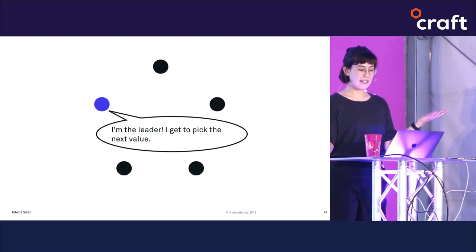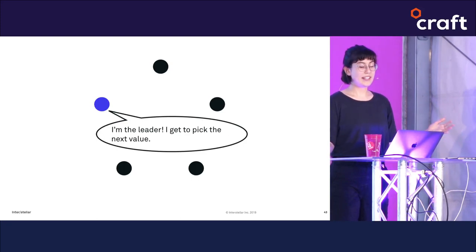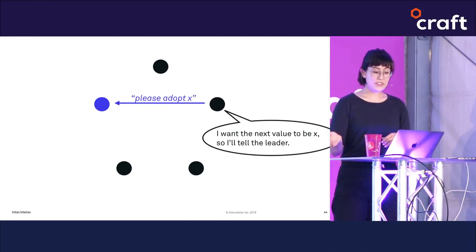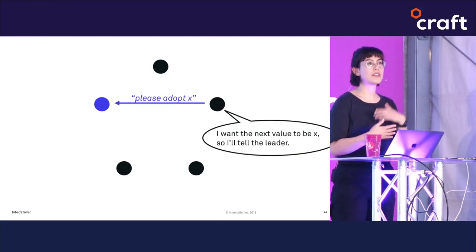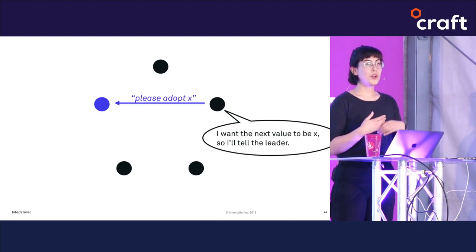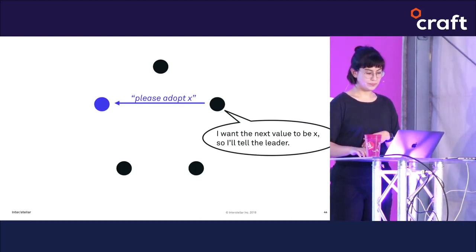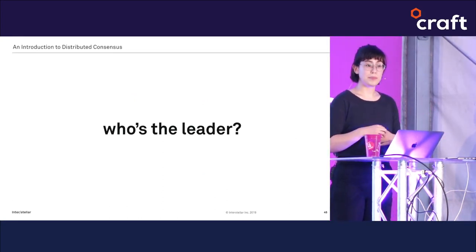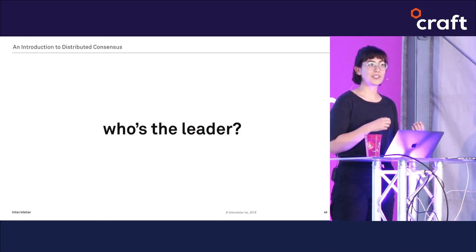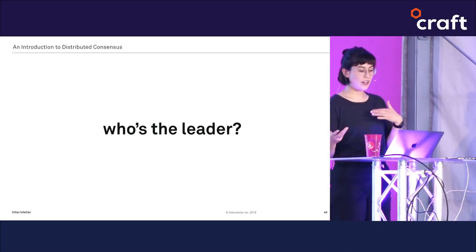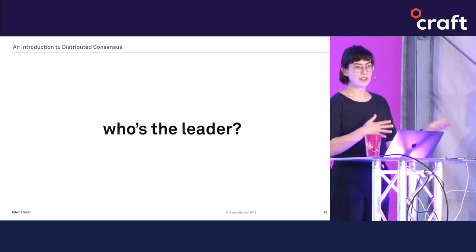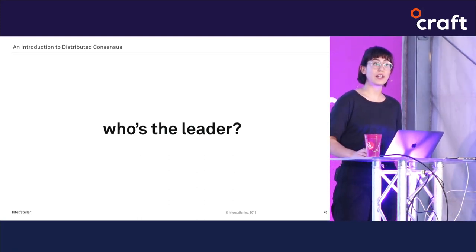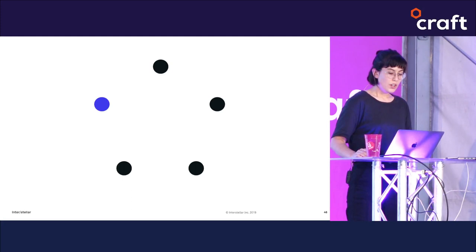If a different node receives an instruction to set a value, it can just forward it to the leader. But how do we know who's the leader? Raft solves this with a leader election algorithm. It's fair — no node is more likely to become leader than others — and importantly it ensures there's no more than one leader at any given time.